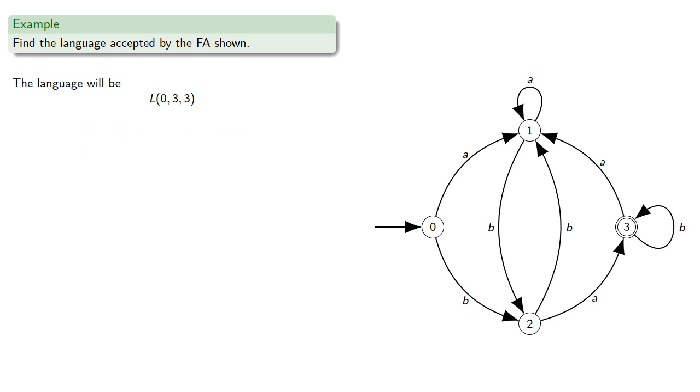So recursively, we have l(0,3,3) is, so again, these go from state 0 to 3, not passing through anything higher numbered than 2, from 0 to 3, looping around, and then onto 3.